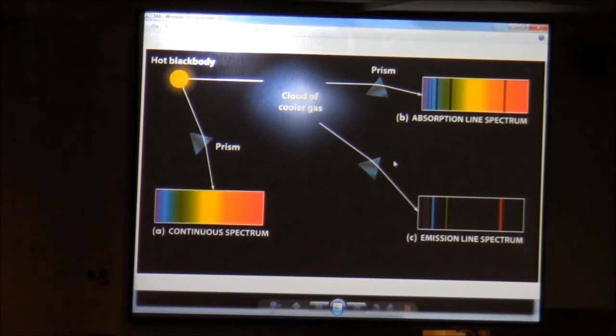Again, we've got the hot black body of the star, and it's emitting continuous light. If it's going through a cloud, and the cloud is cool gas, that means the electrons down there in some lower orbital, and there are certain energies that are permitted to be absorbed, so it can jump up to the various higher levels, and you get an absorption line spectrum.